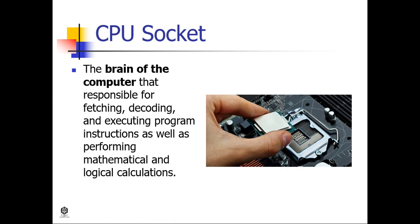The CPU — central processing unit — is the most important part of your computer. It is called the brain of the computer, responsible for fetching, decoding, and executing program instructions as well as performing mathematical and logical calculations. The CPU socket is where your CPU or processor is installed.